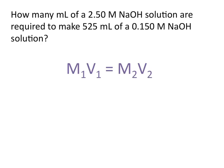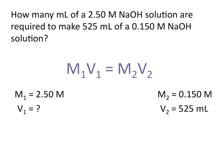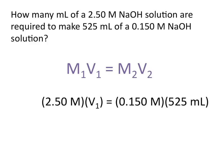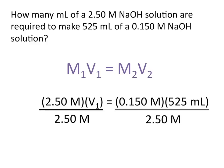Let's write down the information that we're given. Our first concentration is 2.5 molar, but we're asked how many milliliters of that solution are required, so we don't know the first volume. The final volume we want to arrive at is 525 milliliters, with a final concentration of 0.150 molar. Because our concentrations have the same units of molar, we can plug these values into our equation. In order to solve for the volume of our first solution, we need to divide each side by 2.5 molar. This allows units of molar to cancel out.